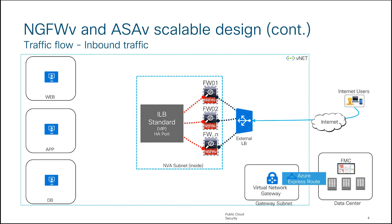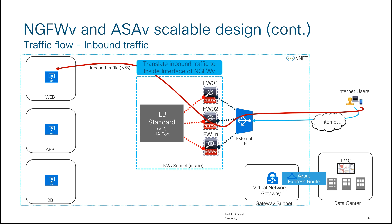Let's talk about a few traffic flows. The first important flow is inbound traffic. Users hit the front-end IP address on the external load balancer, which decides which firewall to forward traffic to. Once traffic is received on the firewall, based on five-tuple hashing, it translates the traffic to the inside interface of the firewall and forwards it to the application server. The application server returns traffic via the same path, maintaining symmetry using source NAT.